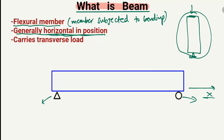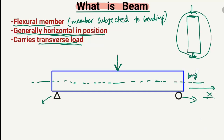The third characteristic of a beam is that it carries transverse load. The longitudinal axis of the beam runs horizontally, and the transverse axis is perpendicular to it. The load acting on the beam is always in the transverse direction — we call this load P, and it is a transverse load acting on the beam.